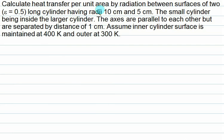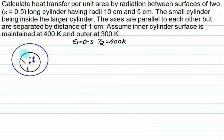Calculate the heat transfer per unit area by radiation between surfaces of two epsilon 0.5 long cylinders having radii equal to 10 cm and 5 cm. The small cylinder being inside the larger cylinder, the axes are parallel to each other but are separated by distance equals to 1 cm. That is slightly eccentric. This one is cylinder 1, this one is cylinder 2, they are offset of 1 cm but this one does not matter.